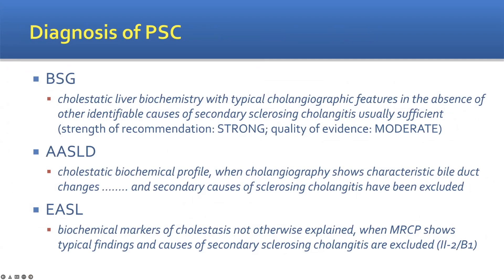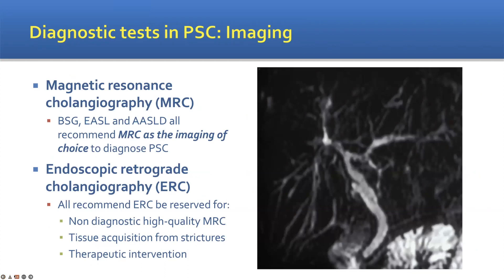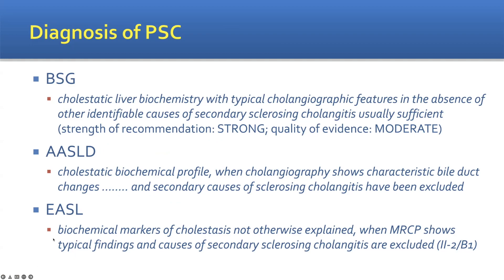In terms of diagnosis, all guidelines are very similar in their classification of how PSC is diagnosed. It involves liver function tests showing a cholestatic pattern with typical features on cholangiograms — inflammation and stricturing — in the absence of other causes such as secondary bile duct damage from surgery. The AASLD and EASL guidelines are very similar to the BSG guidelines, with key features being cholestatic LFTs, cholangiography showing inflammatory change with stricturing, and no other cause identified.